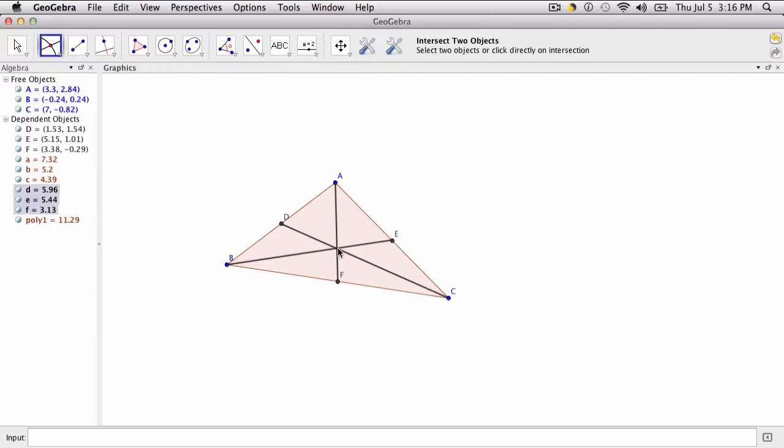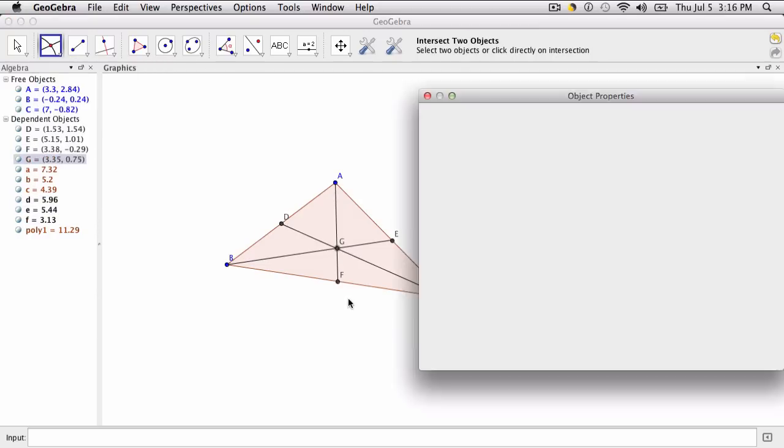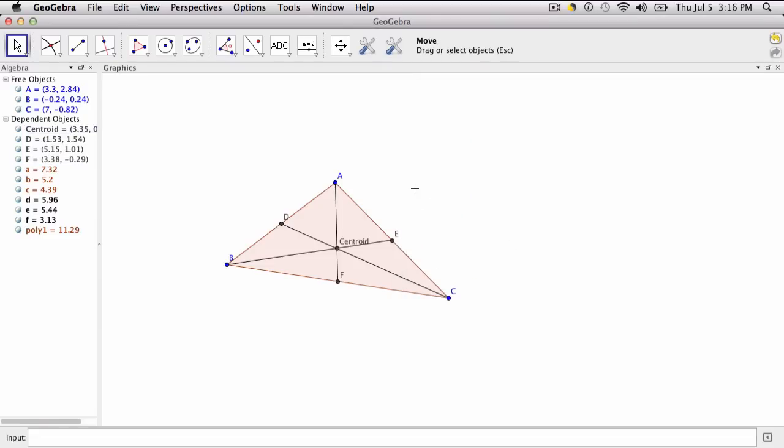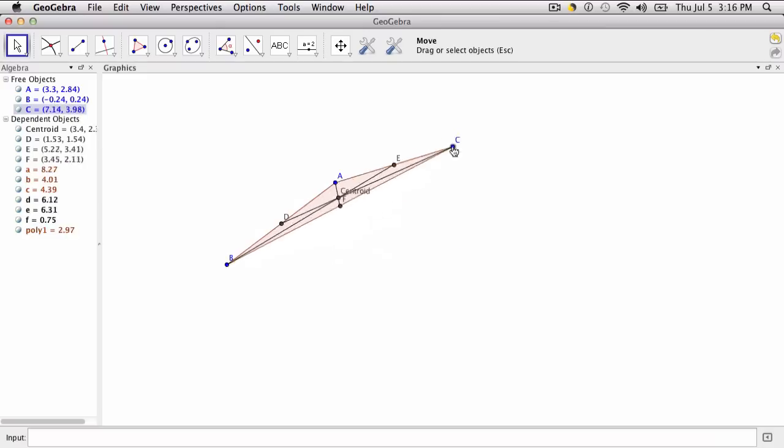We go to intersect two objects. Now point G - if we go to our object properties, you want to rename that. Click on the point, rename it. This is our centroid and there it is. We can move this around.